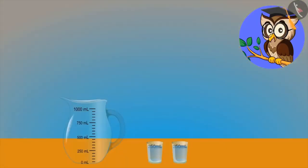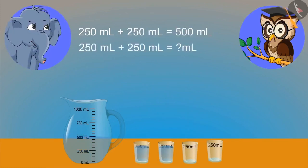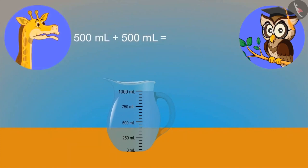These two glasses have 250 ml of water. If both of them combines, how much water will we have? 500 ml water. Yes, you are right, elephant. If we combine two more glasses of 500 ml water in it, then how much total water will we have? 500 ml and 500 ml means 1000 ml, means 1 liter. Yes, correct.